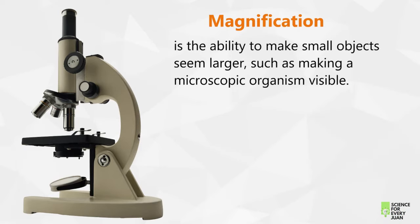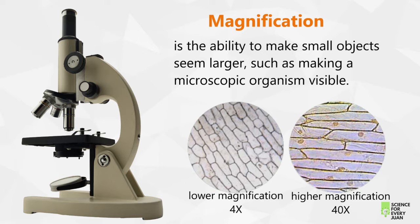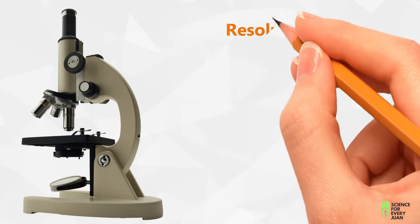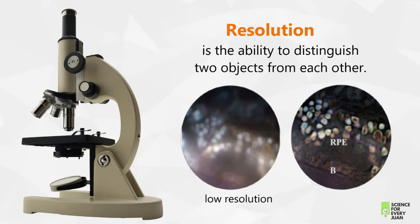Now what's the difference? Magnification is the ability to make small objects seem larger versus making a microscopic organism visible. We can compare the specimen viewed under a lower magnification and at a higher magnification: 4x means it is viewed 4 times its original size, and 40x means it is viewed 40 times its original size. Resolution, on the other hand, is the ability to distinguish two objects from each other. Here we have an example of an image viewed under low resolution and at a high resolution — we can see clearly the object at a higher resolution.